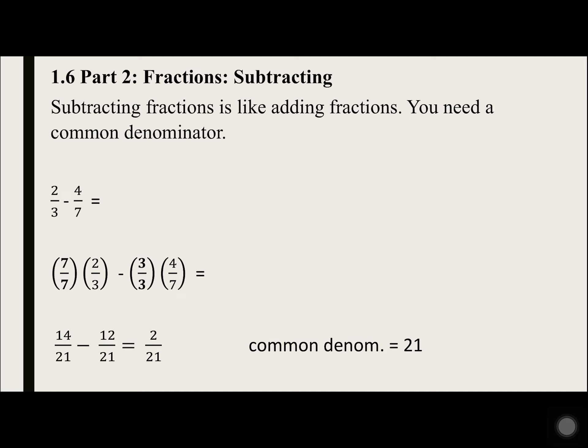Now let's look at the 4 over 7 from the right side. It has a 7 on bottom. We need to times by 3 to get 21.